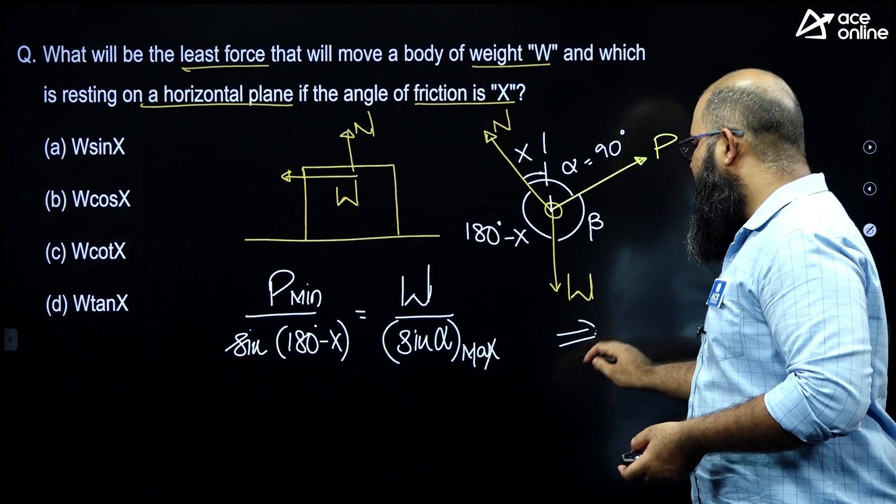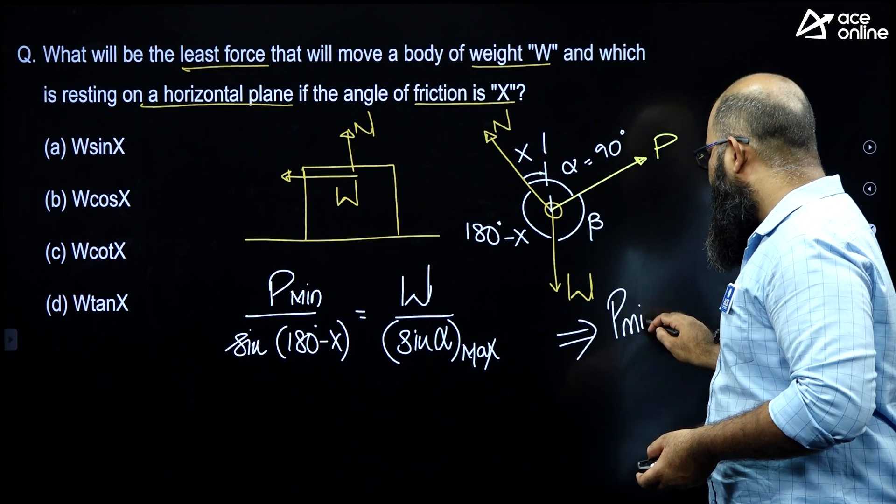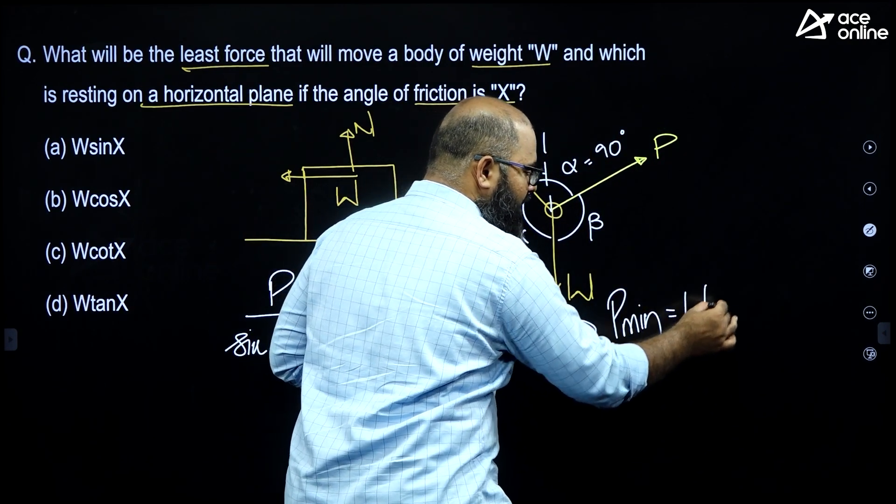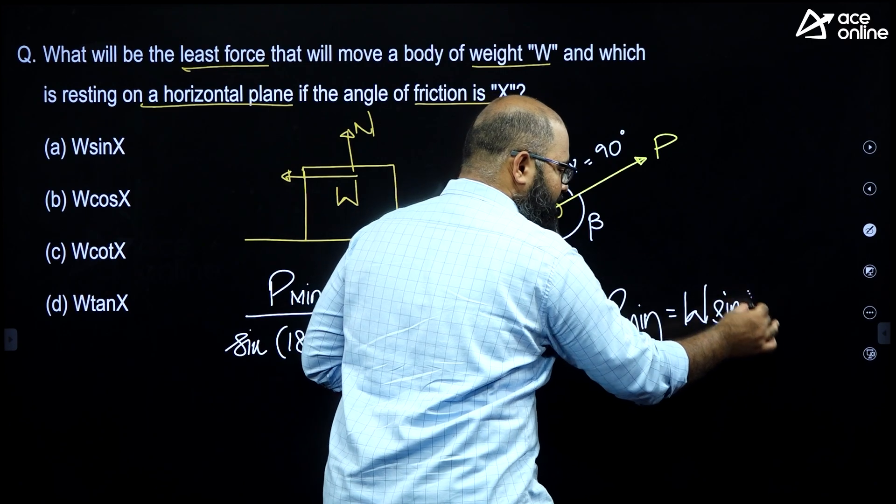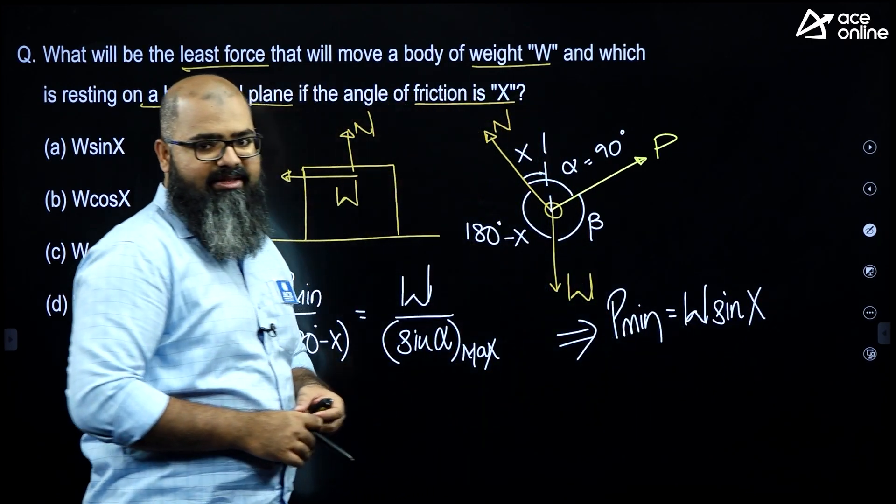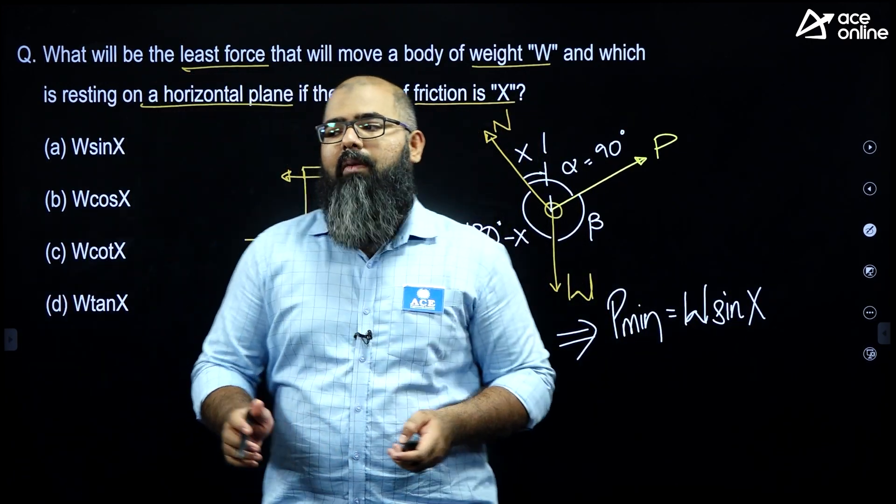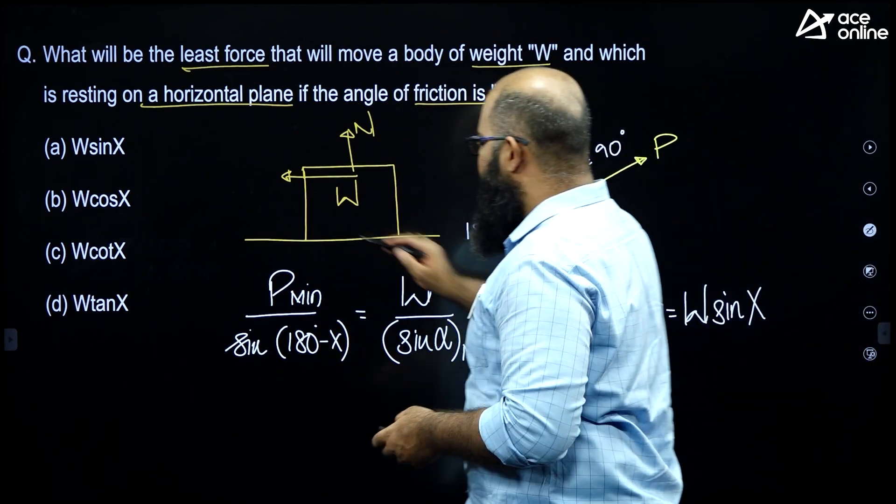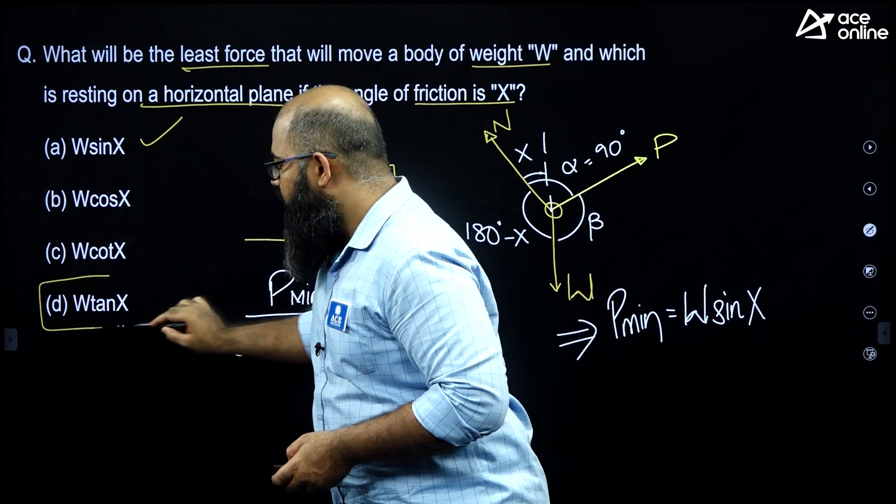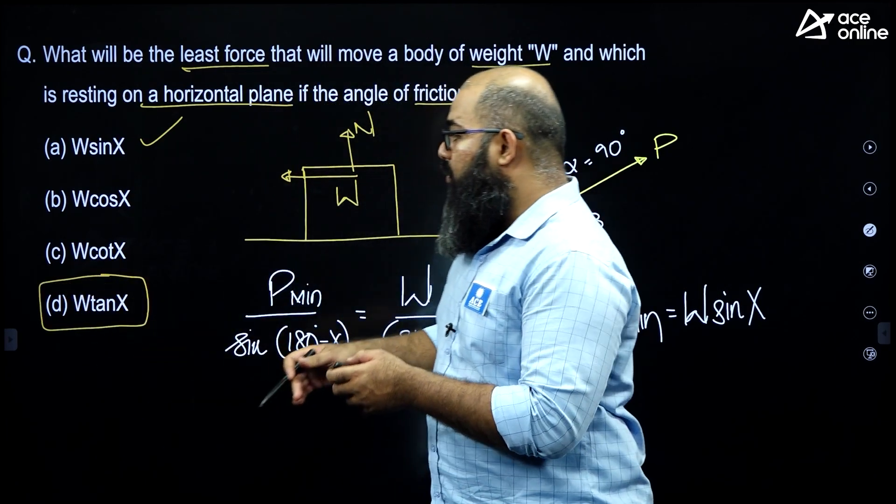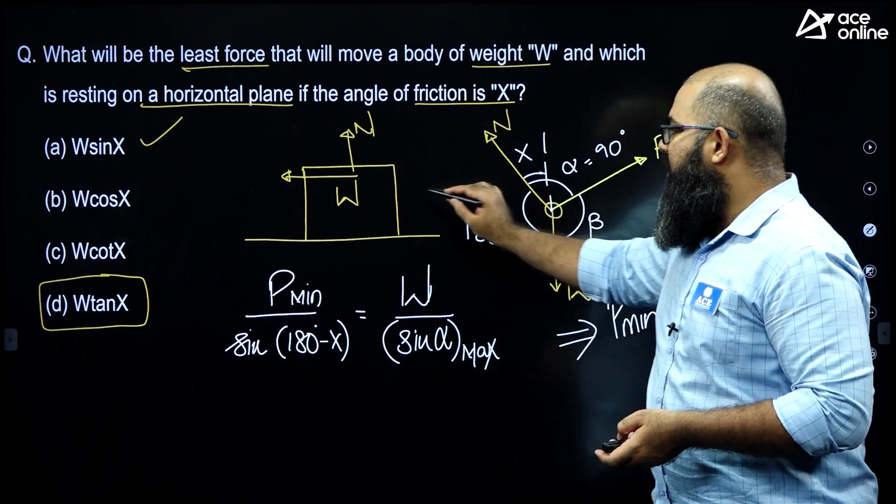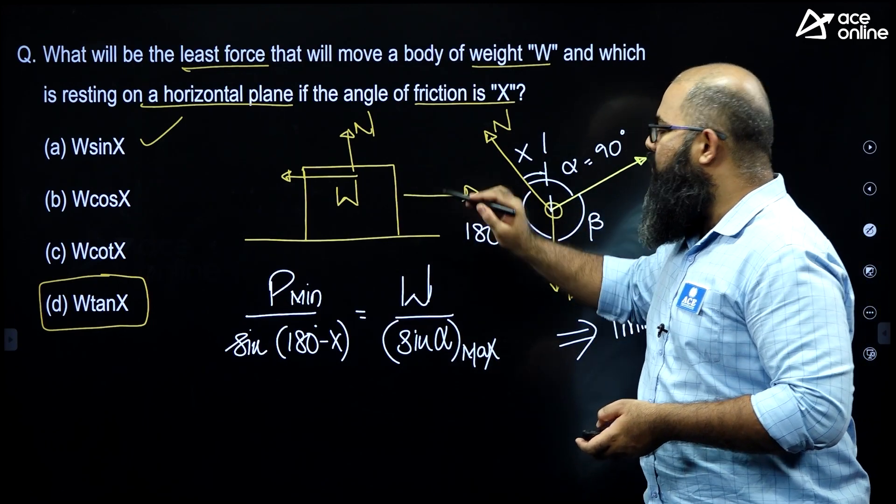Sine of 180 minus X should be equal to sine X. This implies the value of P minimum will be equal to W sine X, W sine X. The correct answer therefore is option A over here. But what TSPSC has done is they have given the correct answer as option D. Now, let me also tell you what probably they have thought to give answer D as correct. They probably have taken the force P to be only in horizontal direction.